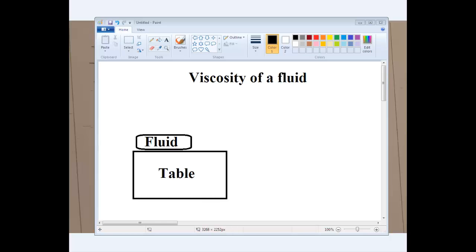Viscosity of a fluid. Viscosity is a measure of fluid resistance to flow. Let's say we have fluid on a table. Viscosity describes the internal friction of a moving fluid.